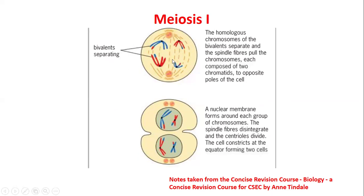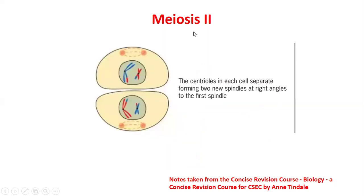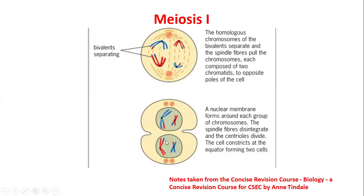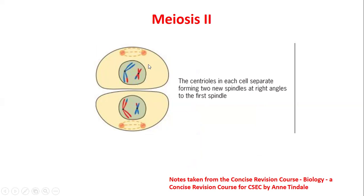To end meiosis I, the homologous chromosomes of the bivalent separate and the spindle fiber pulls each chromosome — composed of two chromatids — to the opposite pole. A constriction forms, producing two cells. That is meiosis I. Unlike mitosis which produces two identical cells, meiosis ultimately produces four daughter cells, so meiosis II is still needed.